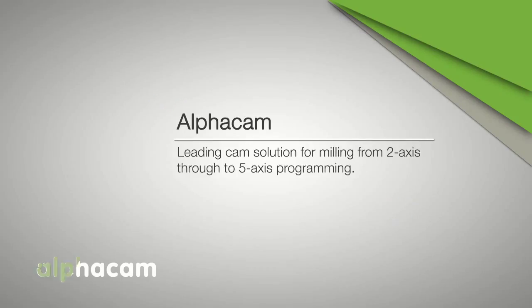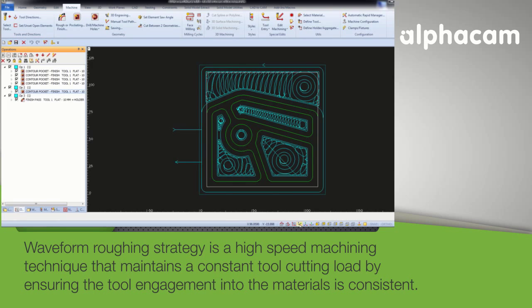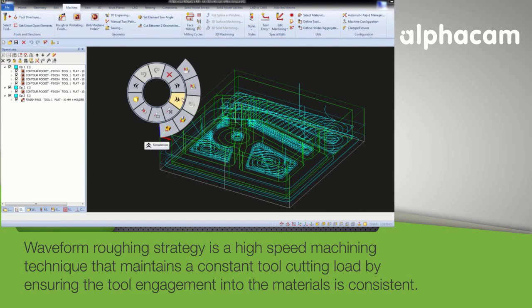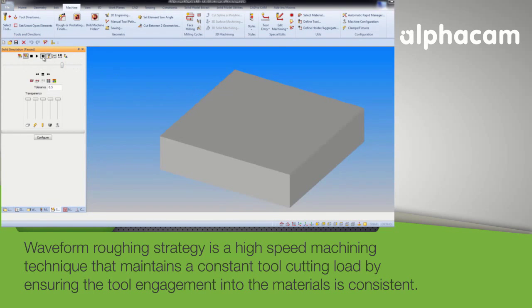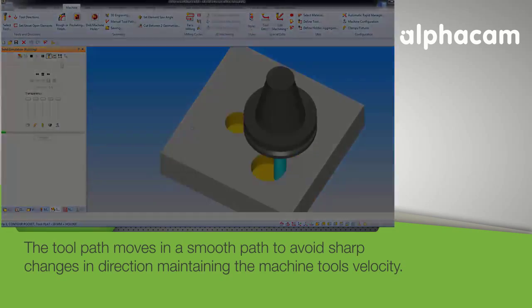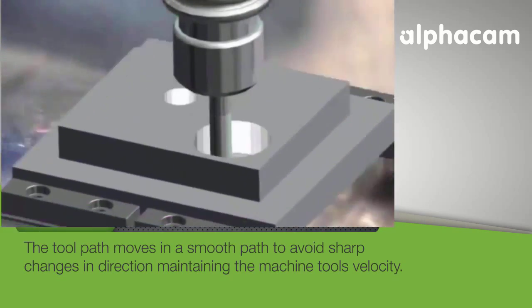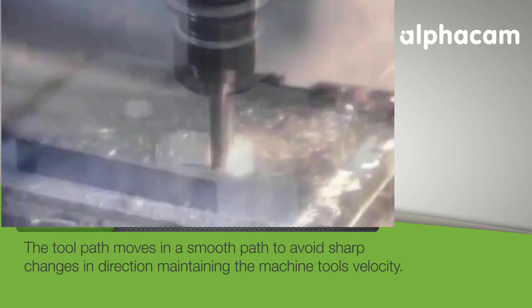AlphaCam milling is a leading CAM solution for milling, from two-axis through to five-axis programming. The waveform roughing strategy is a high-speed machining technique that maintains a constant tool cutting load by ensuring the tool engagement in the material is consistent. The toolpath moves in a smooth path to avoid sharp changes in direction, maintaining the machine tool's velocity.